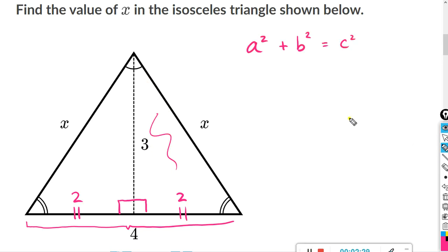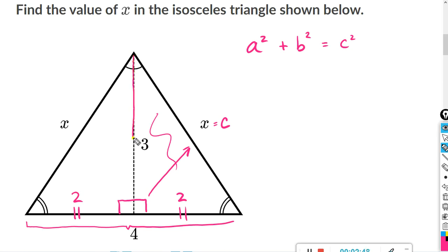Recall the Pythagorean theorem: A squared plus B squared equals C squared. The side across from the right angle is always labeled C — that's your hypotenuse. The other two sides: it doesn't matter which is which, so I'll call this side length A and this side length B.